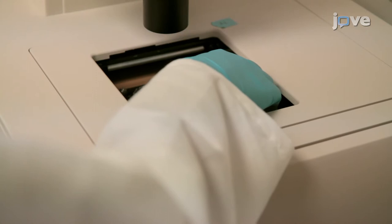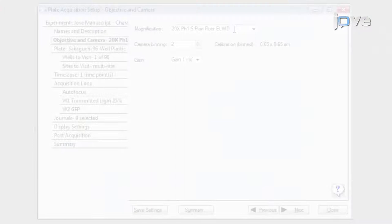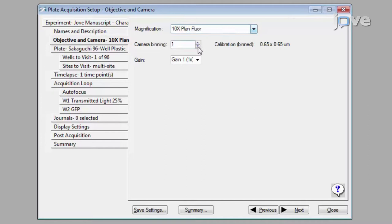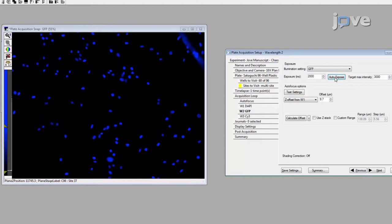To perform automated imaging, load the immuno-labeled plate into the HCS system and allow the plate to equilibrate for 20 minutes. Open the HCS system image acquisition and analysis software. Choose the acquisition settings for the 10x objective using camera binning at 1 and a gain setting of 2. Use the auto-exposure function to find the Z-plane in which the cells reside and calculate the offset for each wavelength of interest.